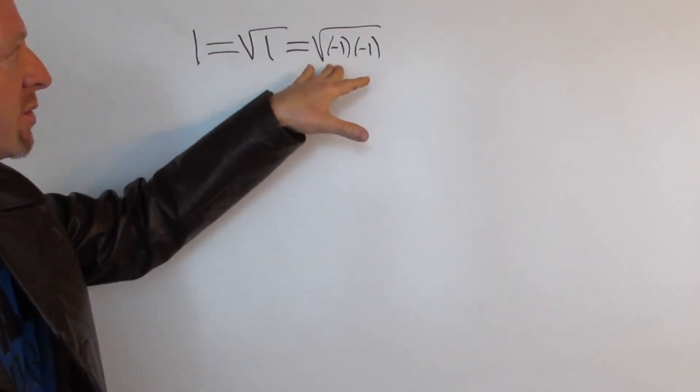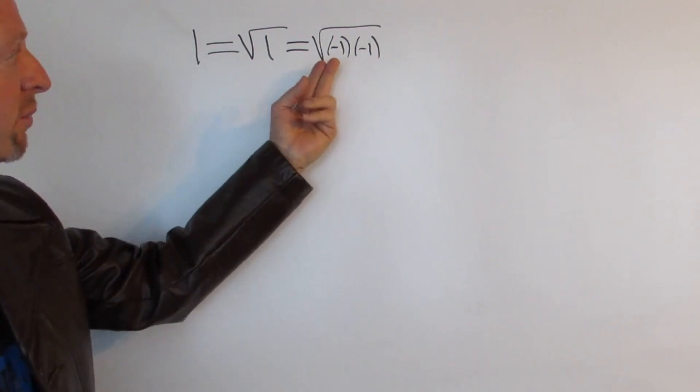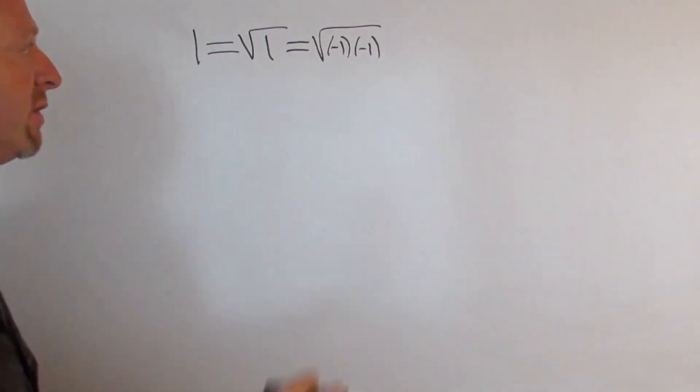Then you can use the property of square roots that allows you to break these up. So you can write this as the square root of negative 1 times the square root of negative 1.